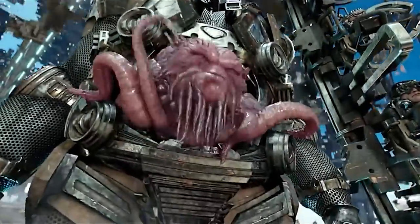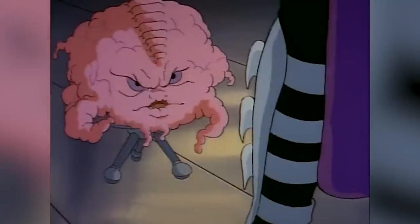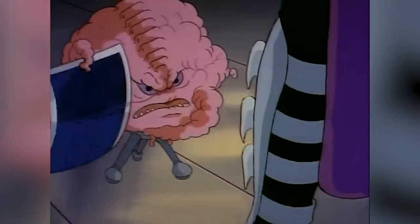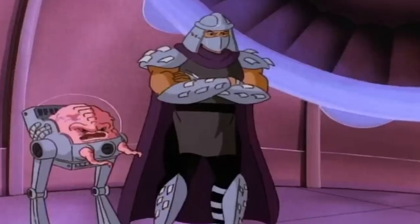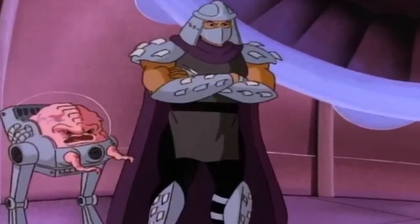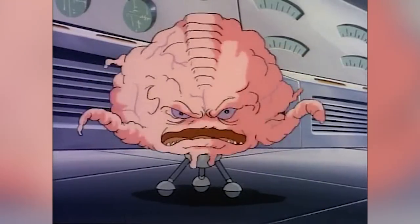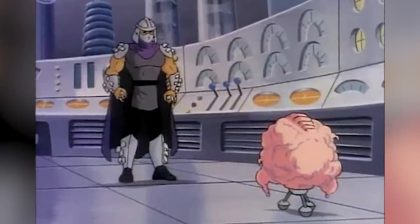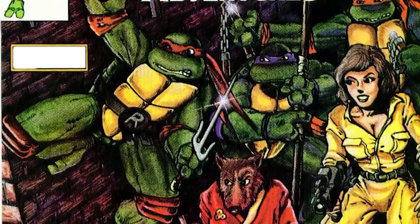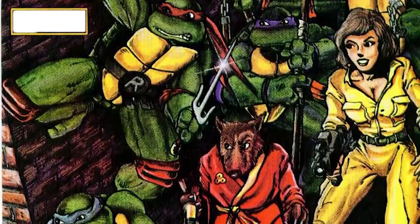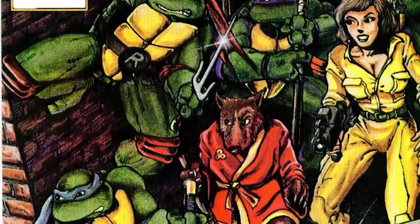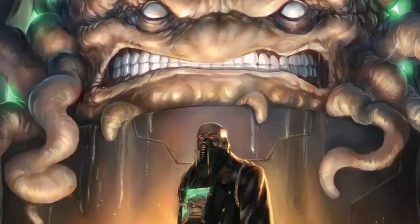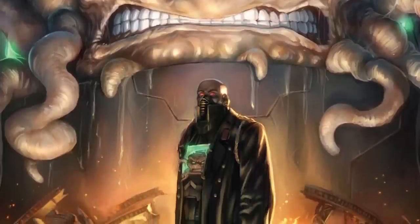Krang is a fictional supervillain who appears in the extremely popular animated series Teenage Mutant Ninja Turtles. He has been a part of the 1987 series as one of the primary antagonists alongside Shredder. However, his motivations are different compared to his ally — he does not care much for the Ninja Turtles; he just wants to take over planet Earth. He made his comic book debut in 1988 with the first issue of Teenage Mutant Ninja Turtles Adventures Volume 1.